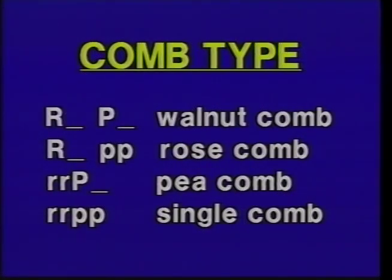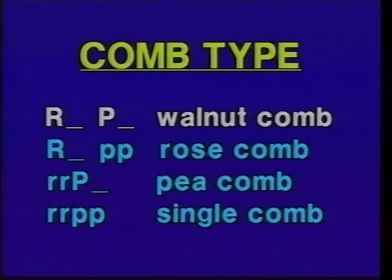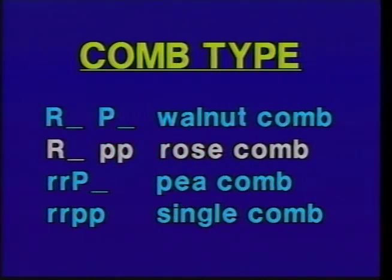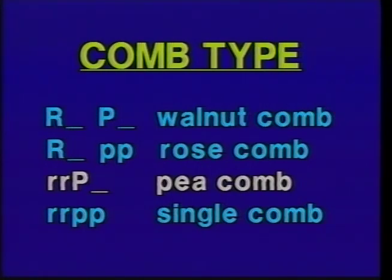The next example deals with comb type, which differs from the others because it's controlled by genes at two loci. We'll look at three of the four comb types discussed in the lab manual. Walnut comb is not included, but it results from dominant alleles at both the R and P loci. Rose comb individuals are homozygous for the recessive small p allele and either heterozygous or homozygous for the large R allele. Pea comb animals are homozygous for the recessive little r allele and either heterozygous or homozygous for the capital P allele.